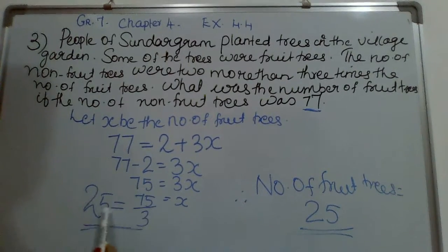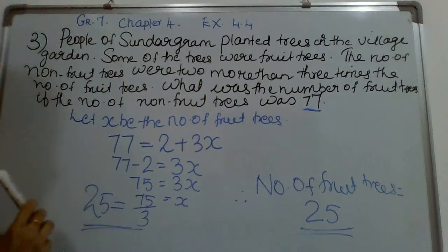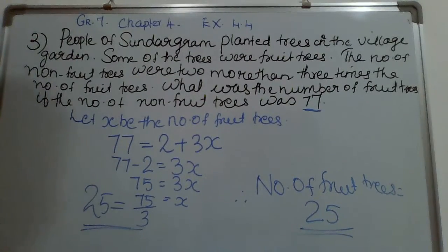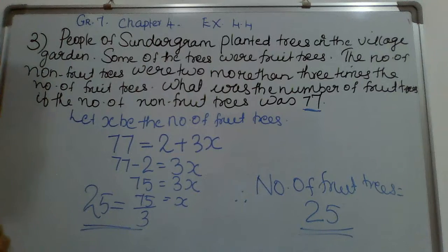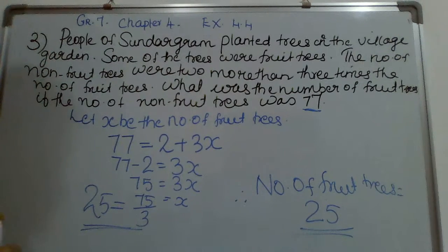75 divided by 3 is equal to 25. So there are 25 fruit trees. Thank you for watching — please subscribe and like my channel. Thank you very much.